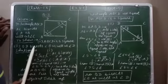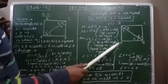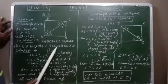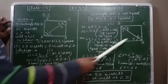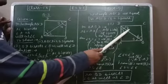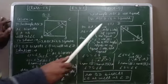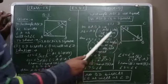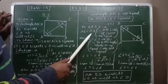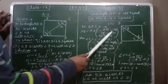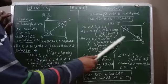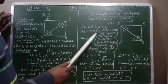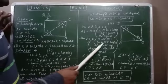For the second part, we draw the figure again and join BD. We want to prove that BD bisects angle B as well as angle D, meaning angle 5 equals angle 6 and angle 7 equals angle 8. Taking triangle ABD: AB and AD are equal because it is a square, so all sides of a square are equal. Since two sides are equal, their opposite angles are equal, so angle 5 equals angle 7.